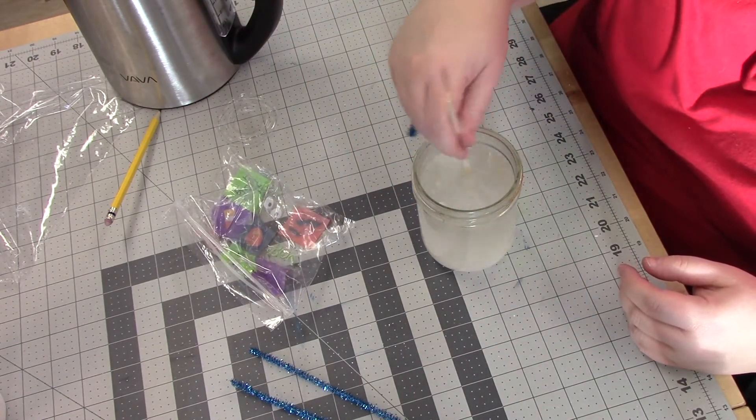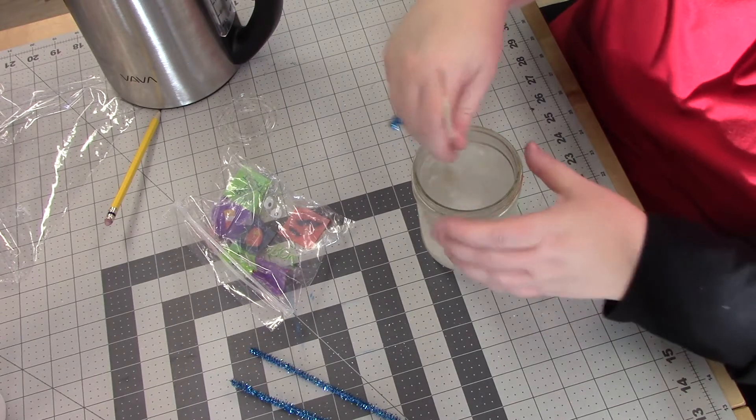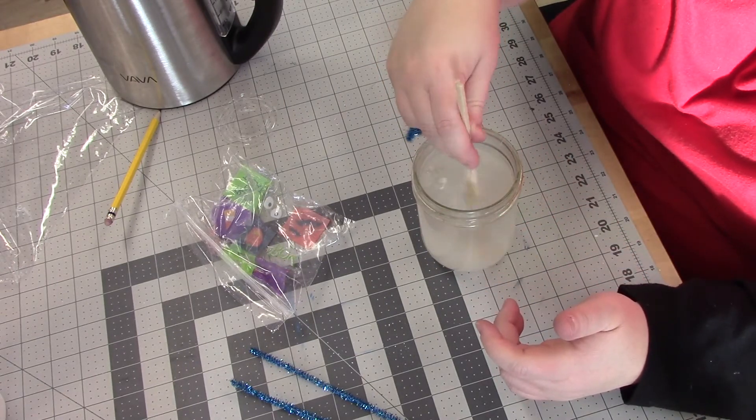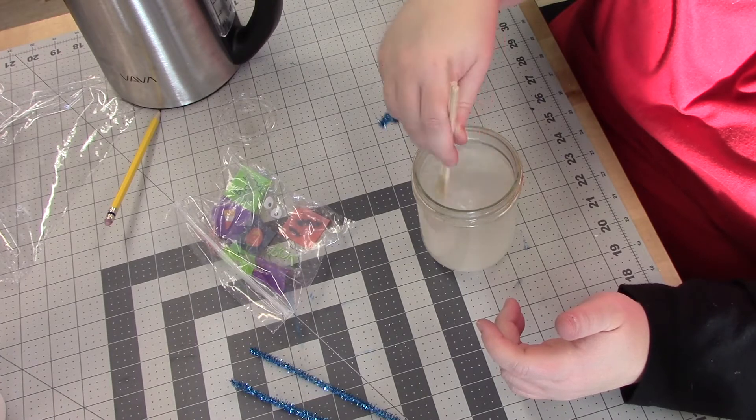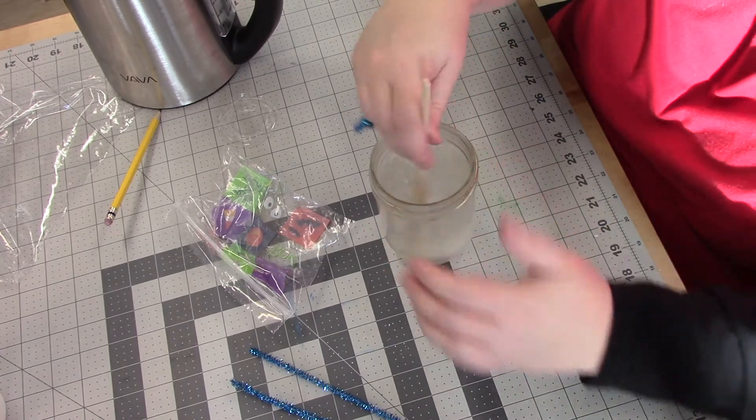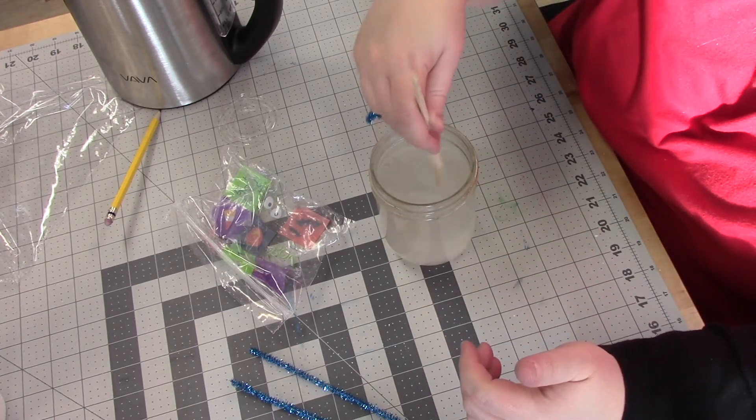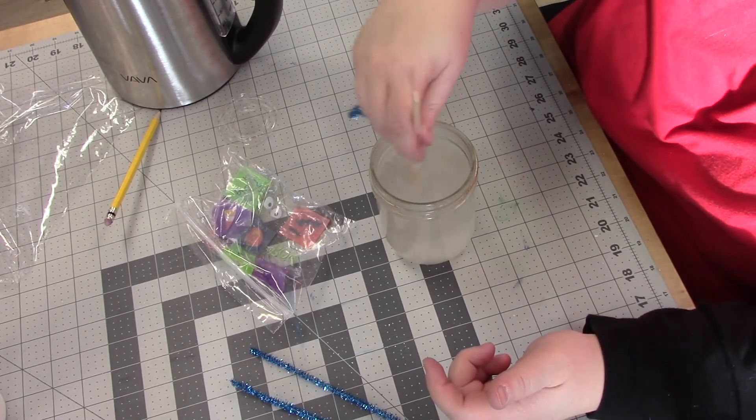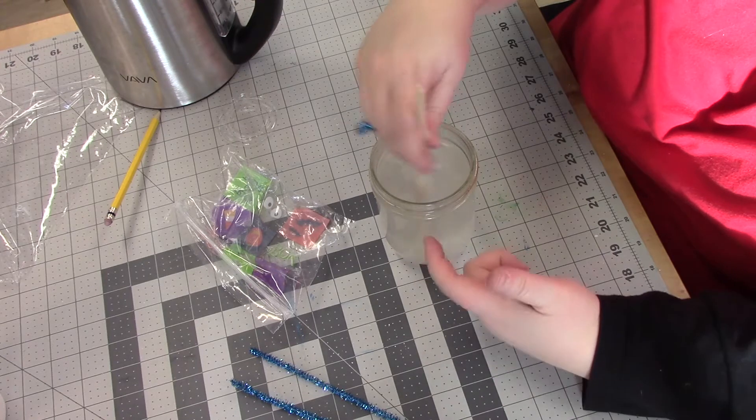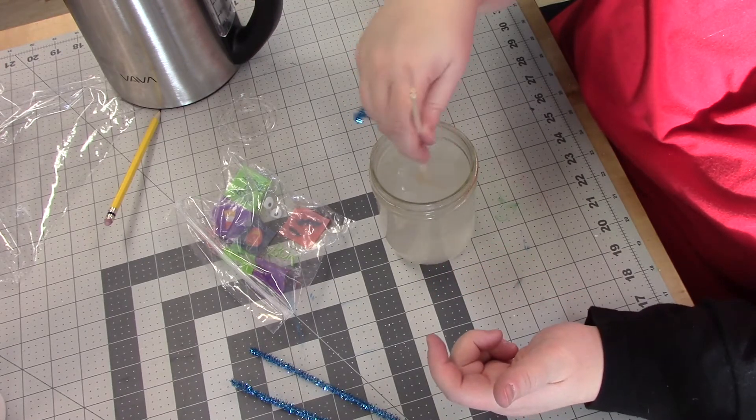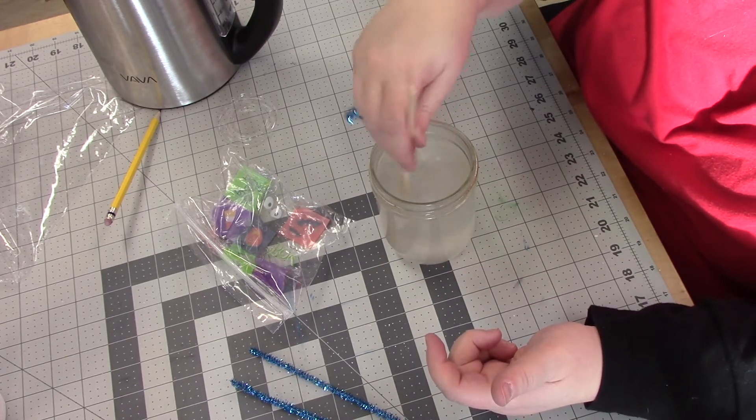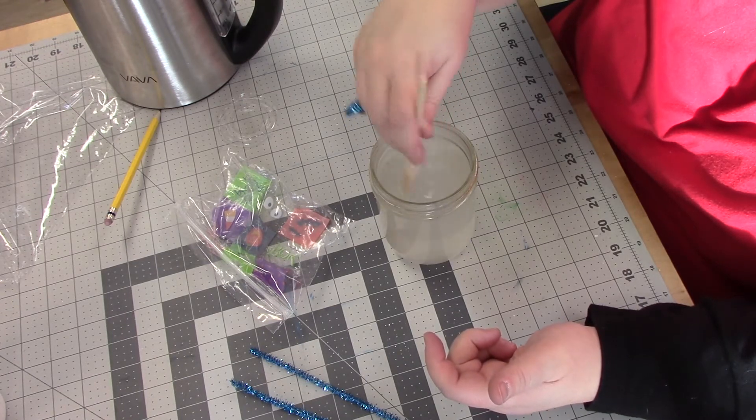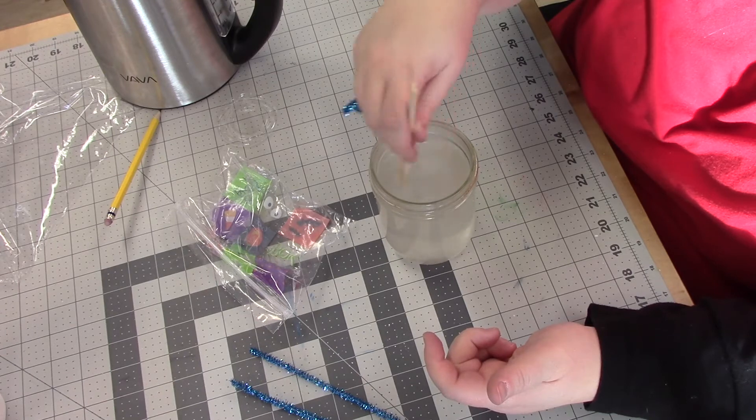So just make sure you stir it until you can no longer see the borax in the bottom of your cup. When you're using the hot water, you want to make sure that whatever bowl or cup you're using is safe for hot water. This is a canning jar, so these are meant to get really warm. So make sure you have heat-safe glass that can handle the boiling water without shattering.